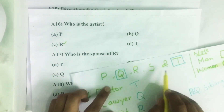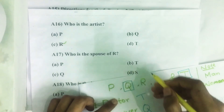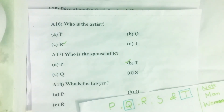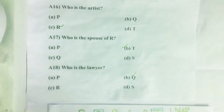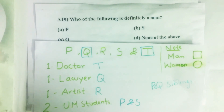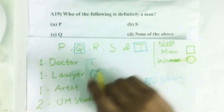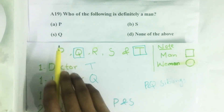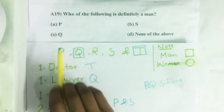Question number 18 — who is the lawyer? The lawyer is Q. Question number 19 — who of the following is definitely a man? A man is denoted by the square, so Q is a man.